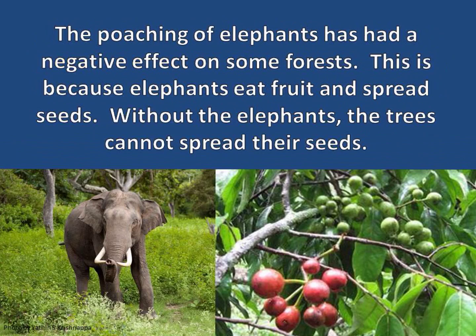The poaching of elephants has had a negative effect on some forests. This is because elephants eat fruit and spread seeds. Without the elephants, the trees cannot spread their seeds. This example shows how connected the organisms in an ecosystem can be, and how reducing one population can affect another in ways that are often hard to predict.